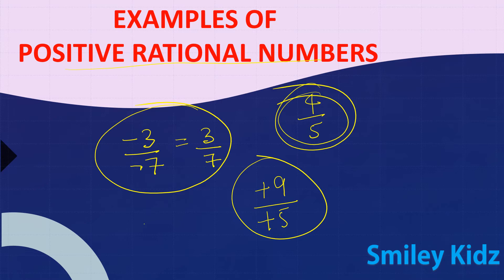But remember, every rational number is either positive or negative except 0. Zero is neutral — it is neither a positive nor a negative rational number.